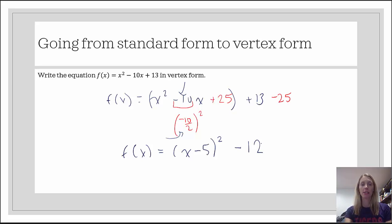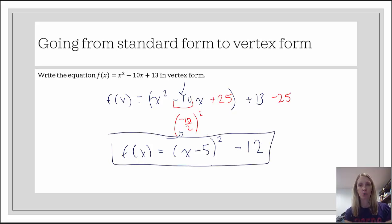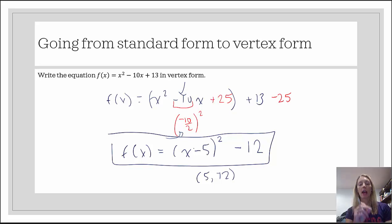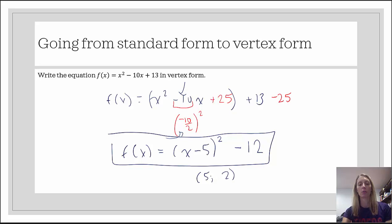So we get x minus 5 quantity squared, minus 12, because 13 minus 25 is negative 12. That's vertex form. This tells us a is 1, so there's no stretch or shrink, it's positive so it opens up, and the vertex is (5, negative 12). Notice that h has the opposite sign of what we see in the parentheses, so x minus 5 means h equals 5, and k equals negative 12.